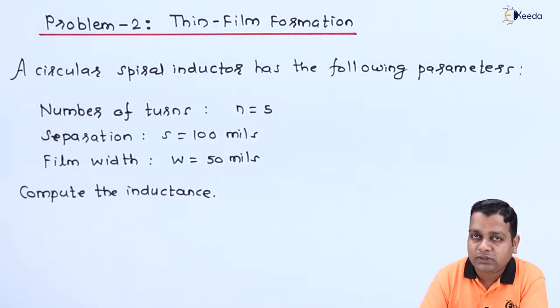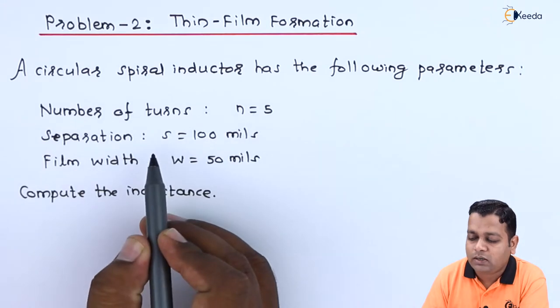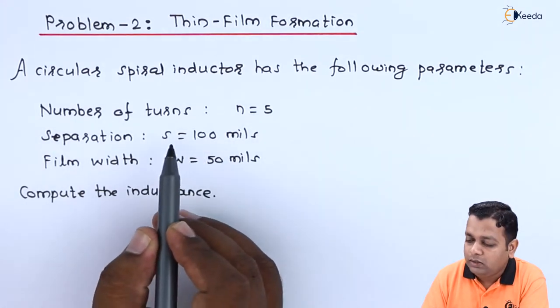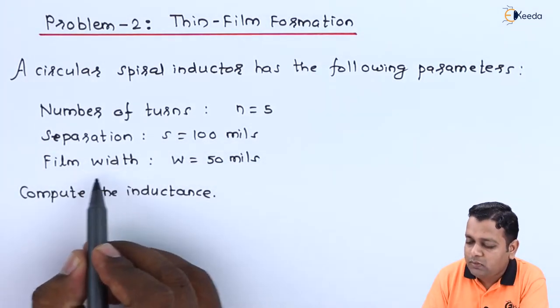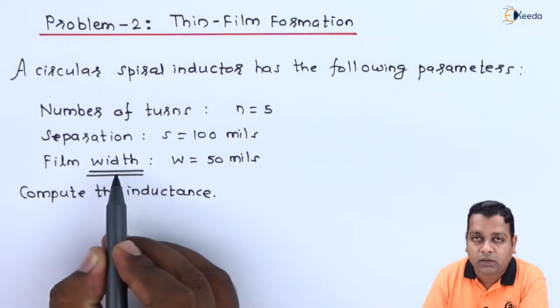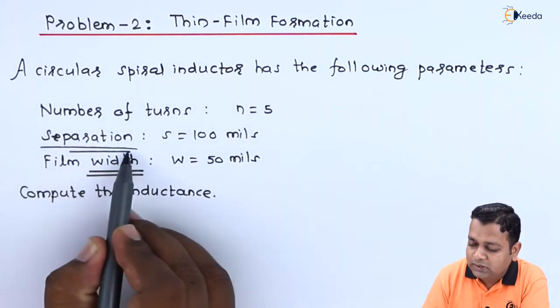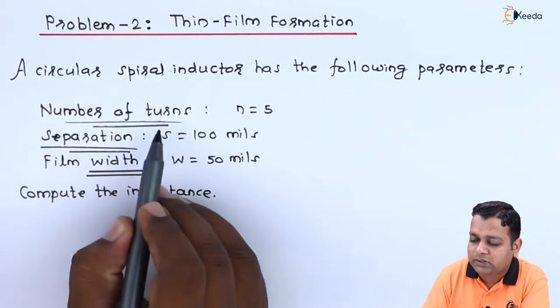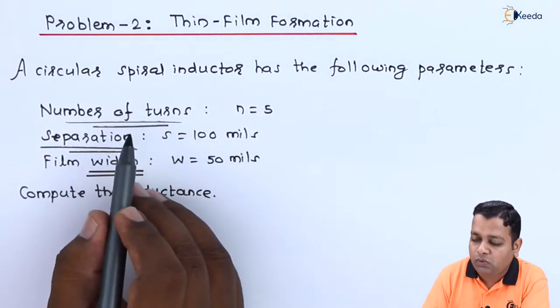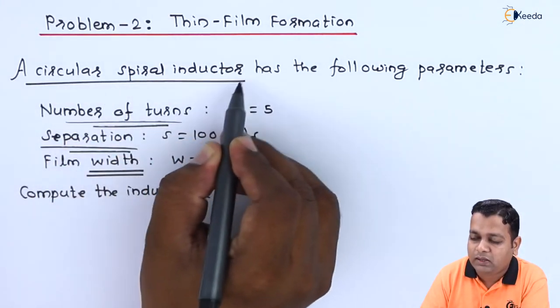To read the problem statement, we have been provided the dimensions along with the number of turns. The dimensions regarding the width of the film, the separation s, and the number of turns for a circular spiral inductor.